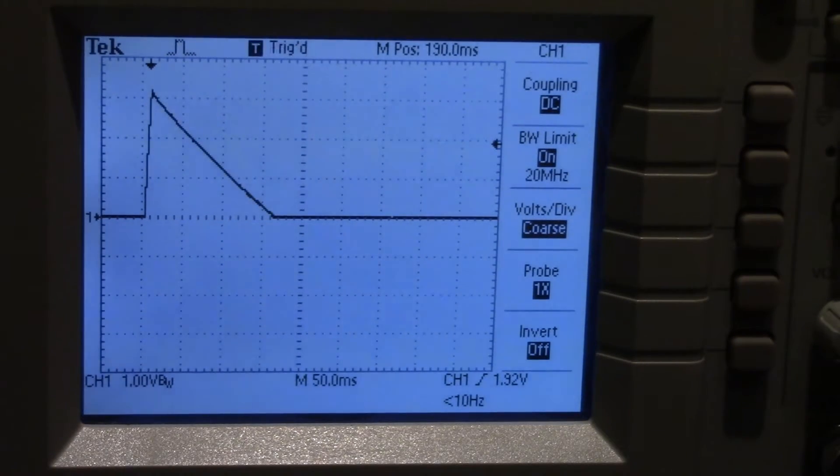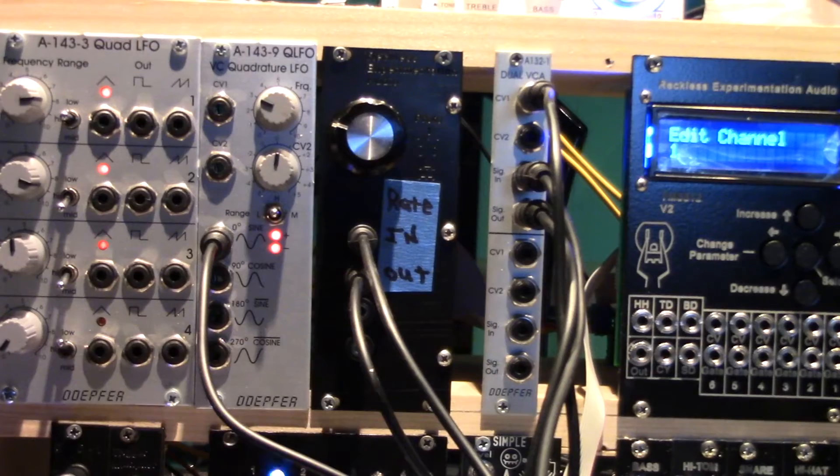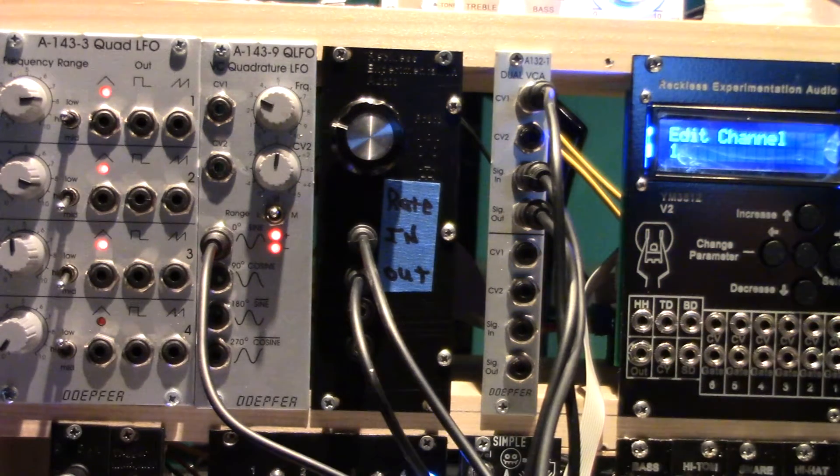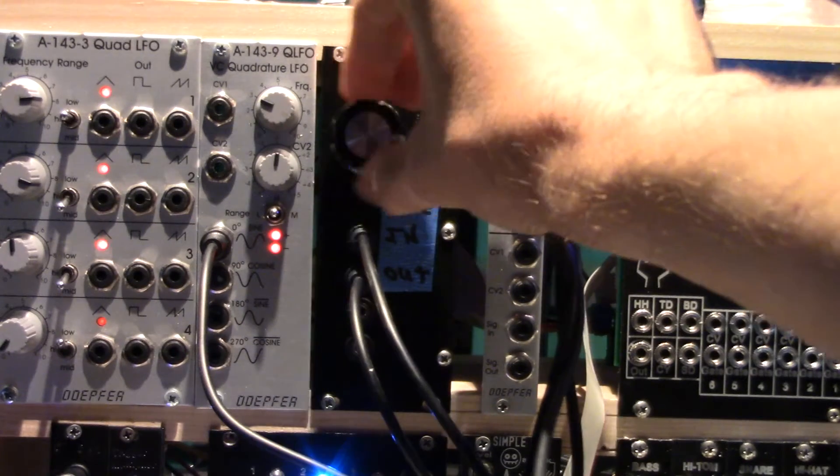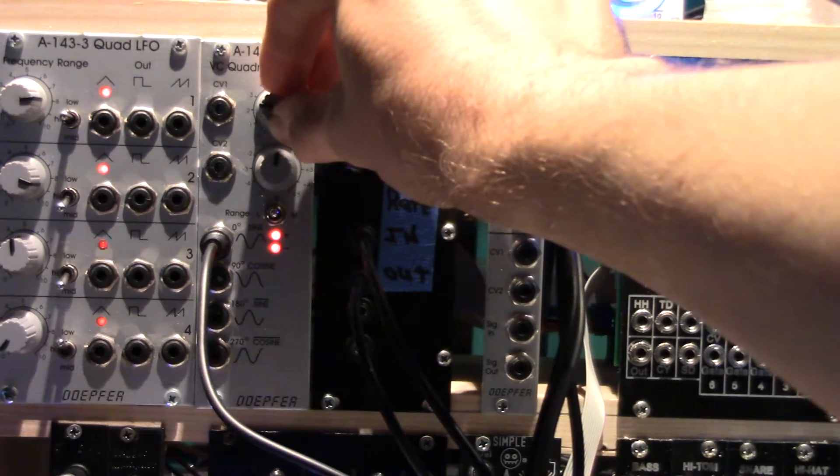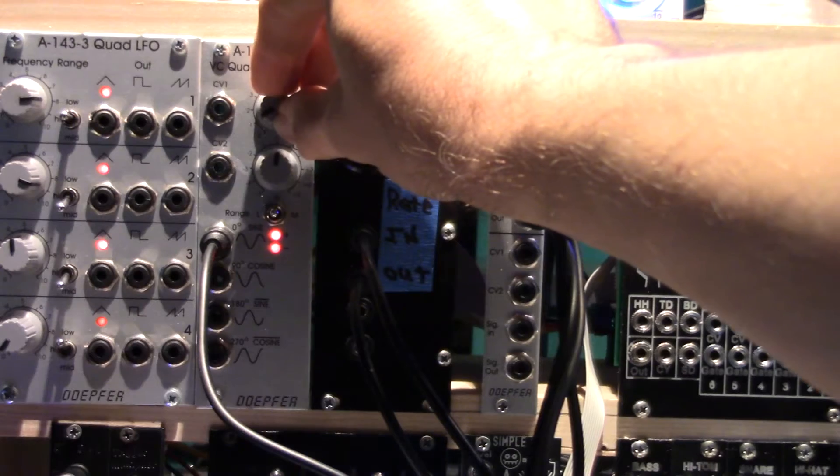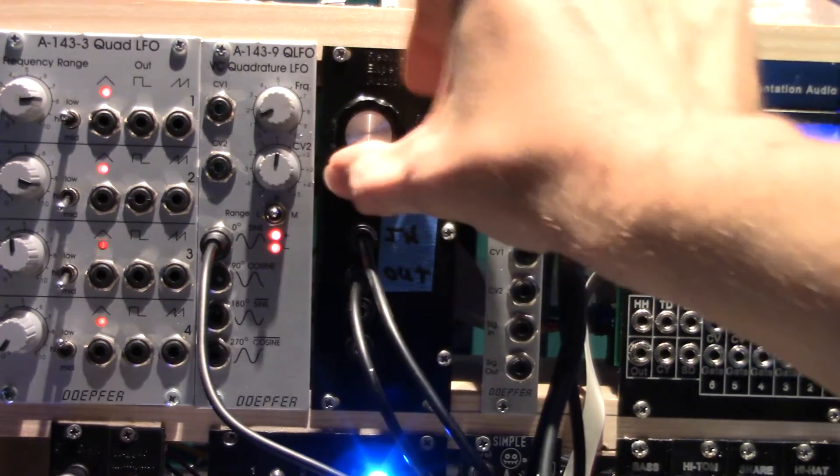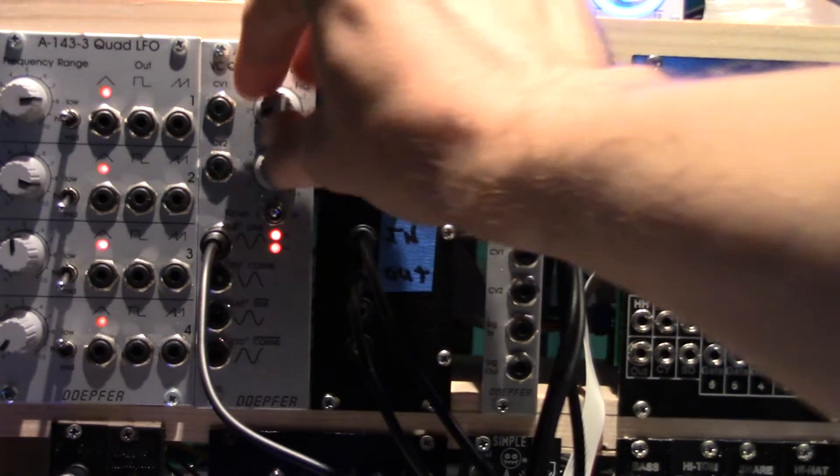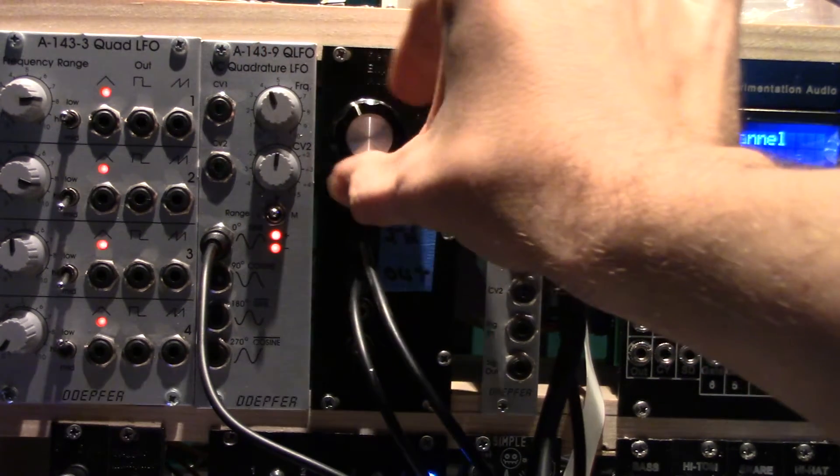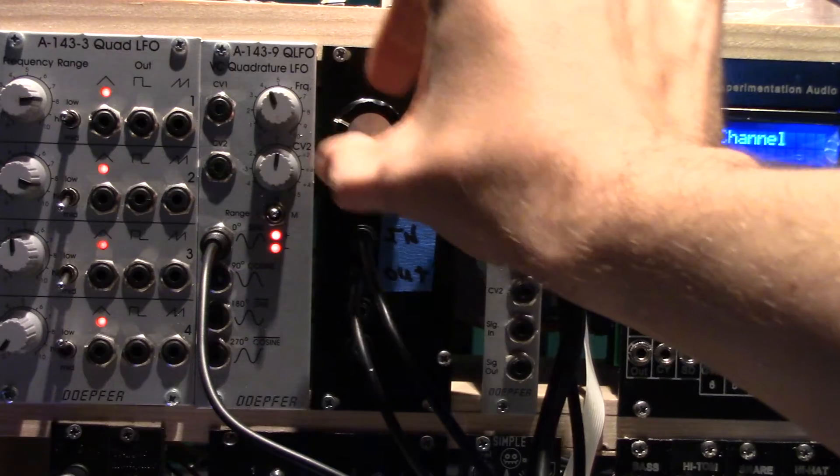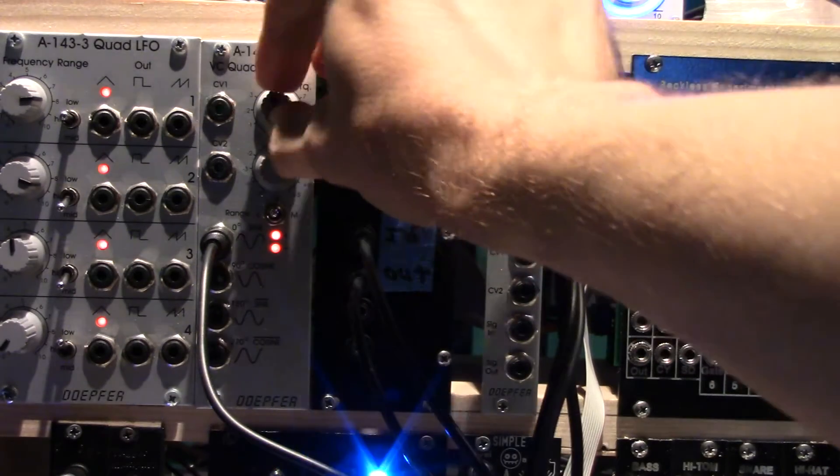As the potentiometer is turned, the release rate of the envelope can be extended. Now let's hear what it does. Drum sounds from a high tom to a bass drum can be made using this envelope generator. Turning the potentiometer all the way down and the frequency up, we can even make a smoke detector sound.